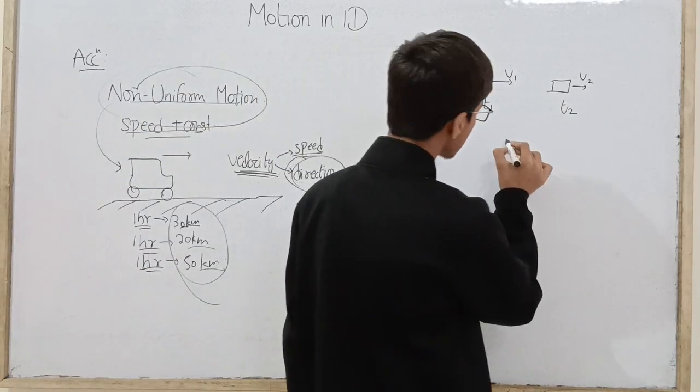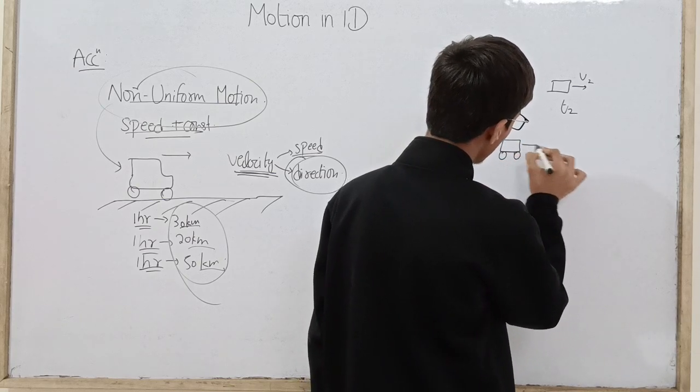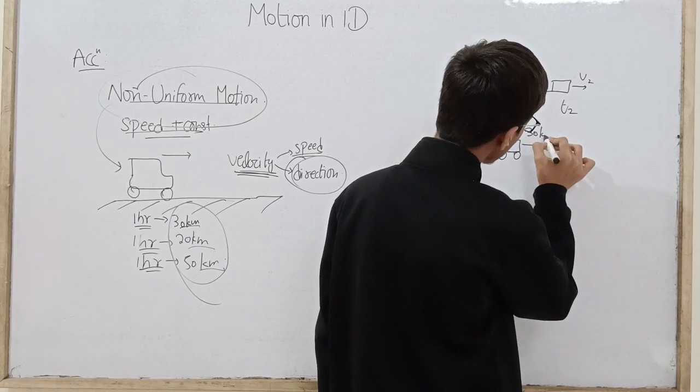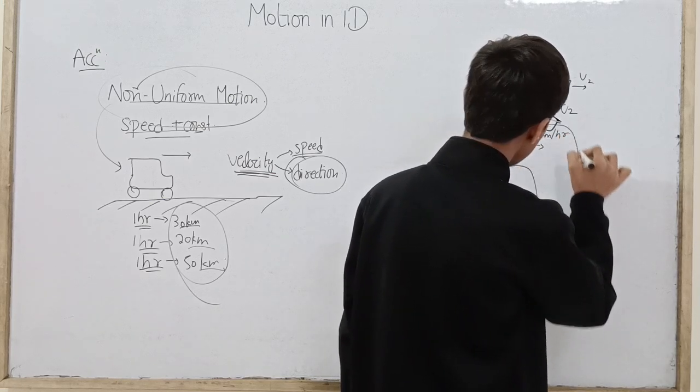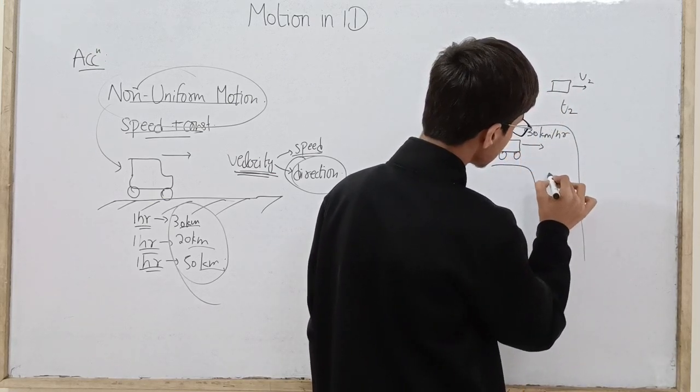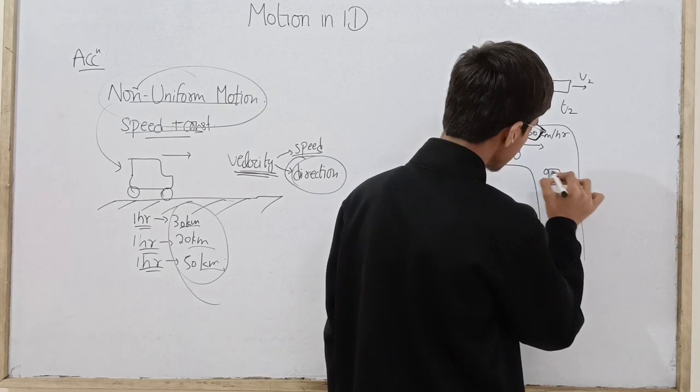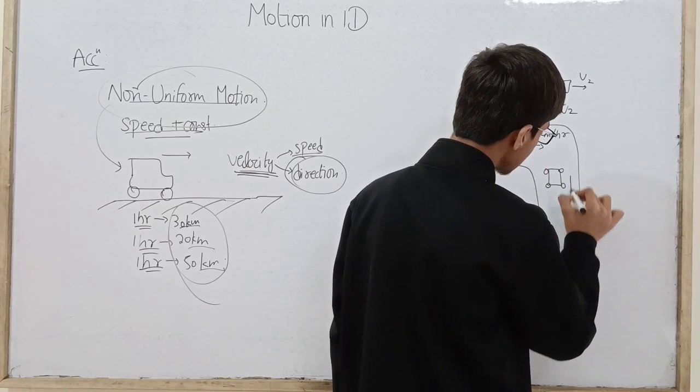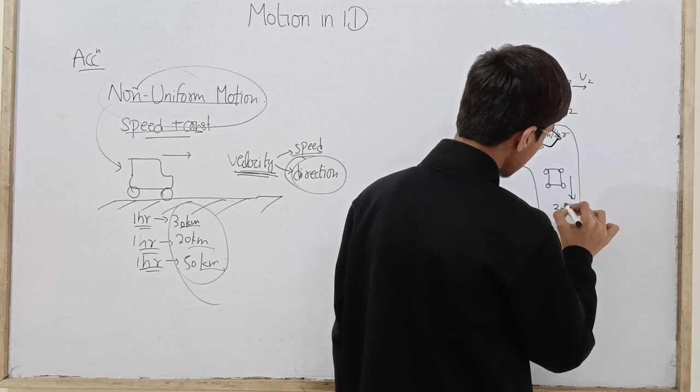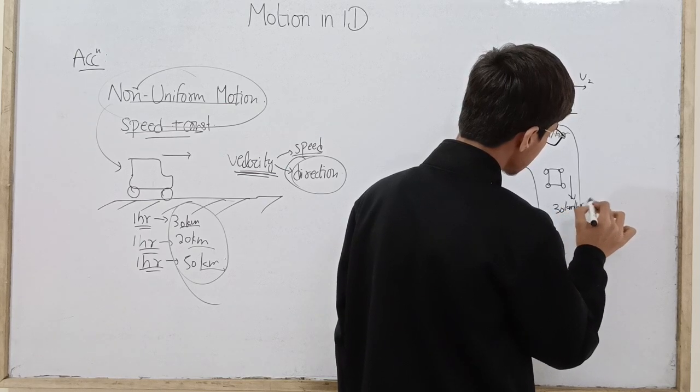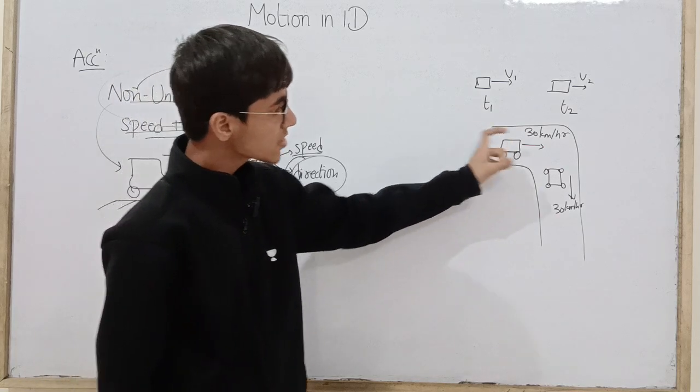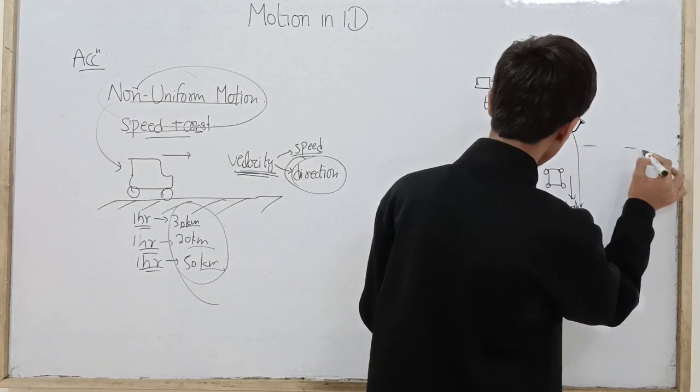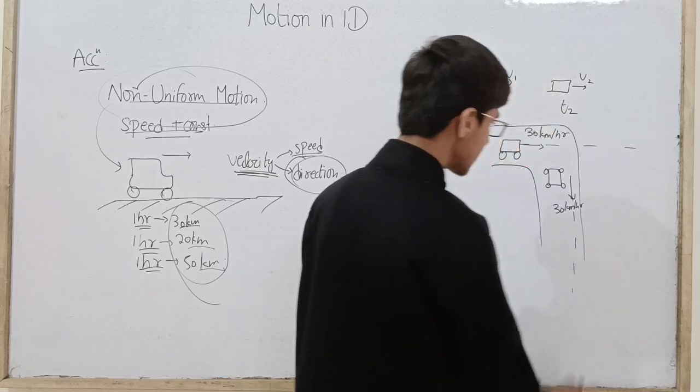Lekin agar koi aisa truck hai jo ki ya phir move kar raha hai, ya phir power direction mein 30 km/hr ke speed and road kuch aisa hai, phir ye ya phir ye ya phir turn liya aage jata hai. Turn liya aage jata hai and ab ye aage ja raha hai. Again turn lene ke baad 30 km/hr ke speed. Speed mein change nahi aaya, change kis mein aaya, direction of motion mein. Phir pehle ye yahaan phir move kar raha tha, ab ye yahaan phir move kar raha hai.